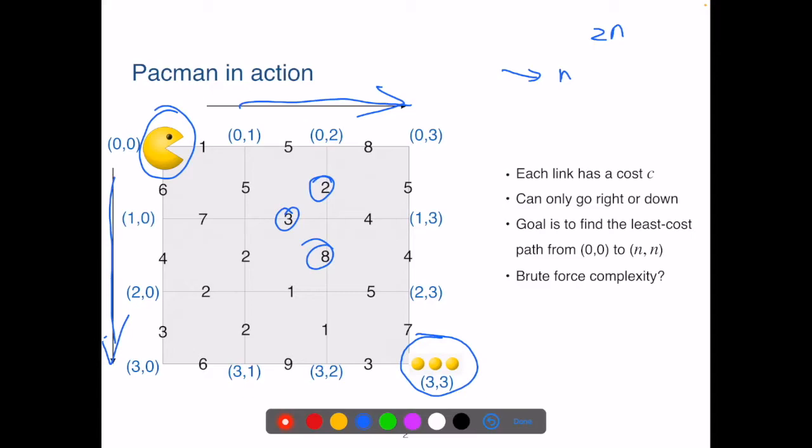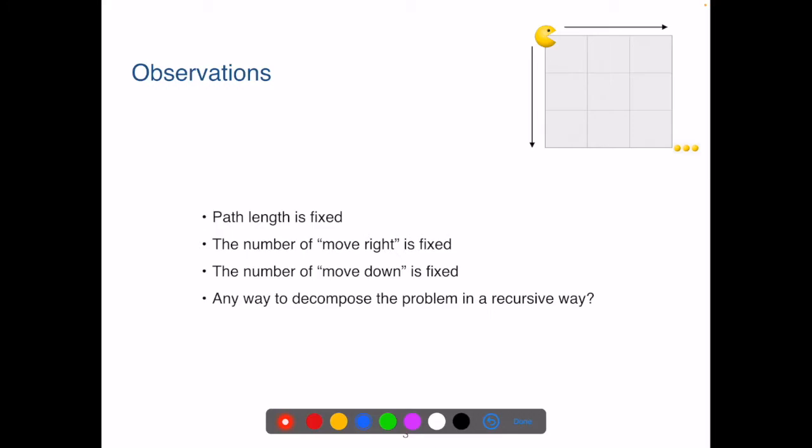Pac-Man needs to go right n times and go down n times as well. So the path length is fixed, 2n. At each step, there are always only two options, either go down or go right. So the total possible paths will be 2 to the power of 2n. So the complexity of this brute force algorithm is to the order of 2 to the power of n. So this is an exponential algorithm.